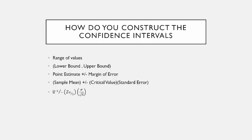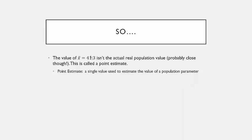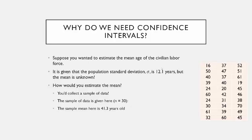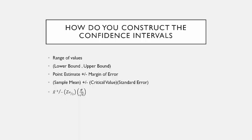The formula for this, from our previous lecture, is the point estimate plus or minus the margin of error. The margin of error in statistics is made up of two things multiplied together: a critical value and the standard error. The sample mean is denoted as x-bar, and we add and subtract z of alpha divided by 2 — I'll come back to that — times the standard error, which is sigma divided by the square root of the sample size. In our example, x-bar is 41.3, sigma is 12.1, and the sample size is 30.